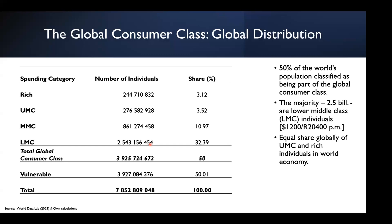At the top end of the distribution, about 250 million individuals are part of the upper middle class or rich, while the core middle class sits at around 900 million, constituting about 11% of the world's population.